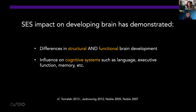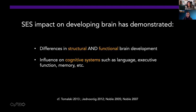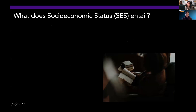With this, we asked what is missing in the studies — where are the gaps? Two things we particularly want to address are: how early can SES effects on the brain be demonstrated, and how changes in forming neural circuitry might relate to developmental differences observed in children from low SES environments. We need to recall that socioeconomic status is a complex measure composed of a combination of things such as educational attainment, income, and occupation.